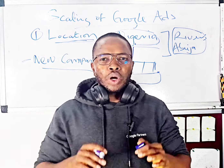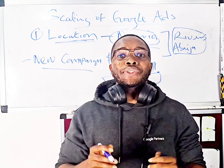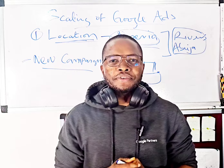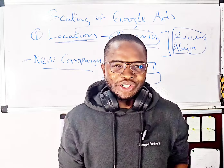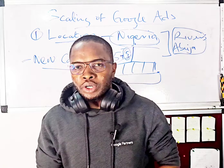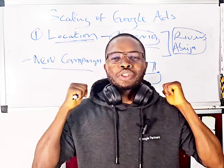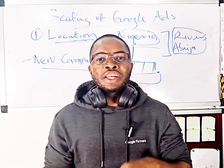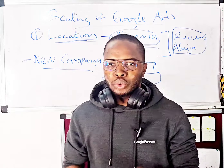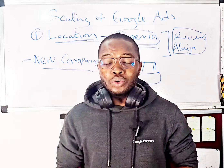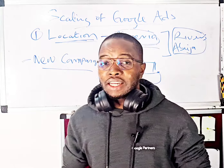By doing it this way, the first campaign continues using five dollars per day to target all 36 states in Nigeria, while the new campaign targets only your top-performing locations. You will be using your budget more efficiently and getting the best results from your advertisement on Google. This is one of the most effective ways to scale on Google Ads.